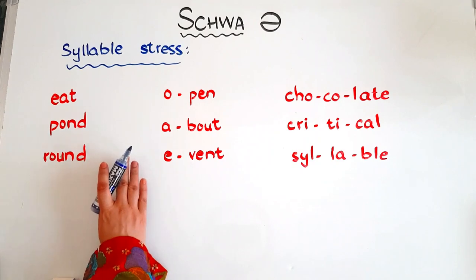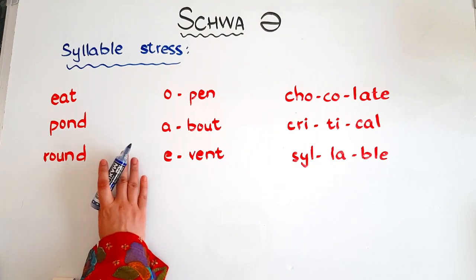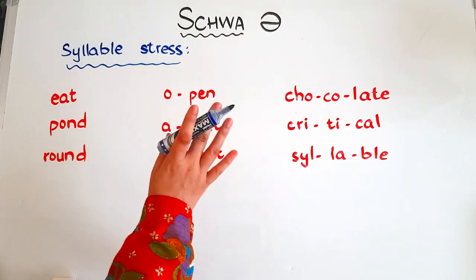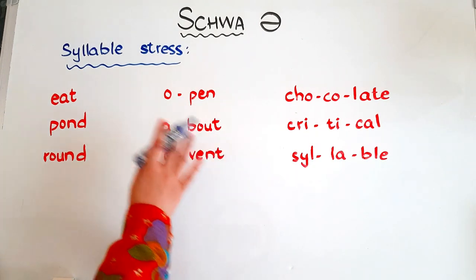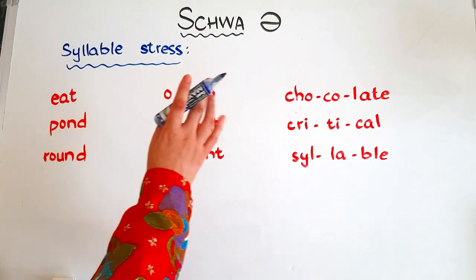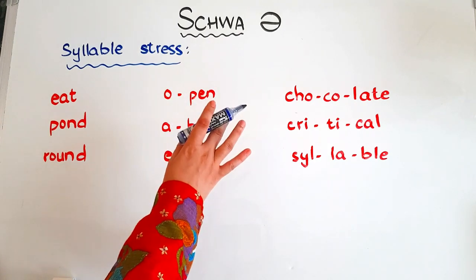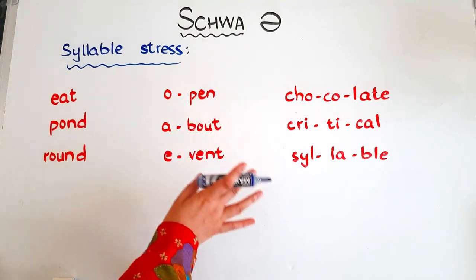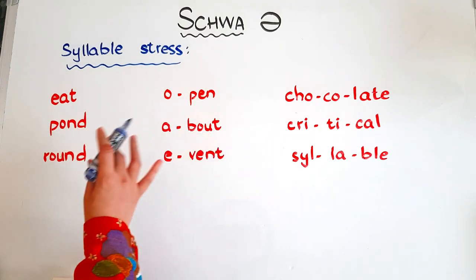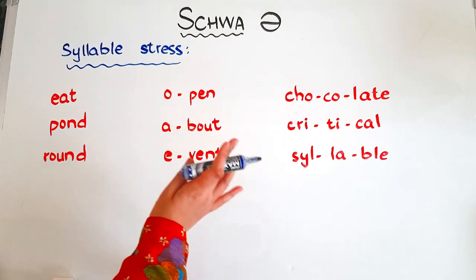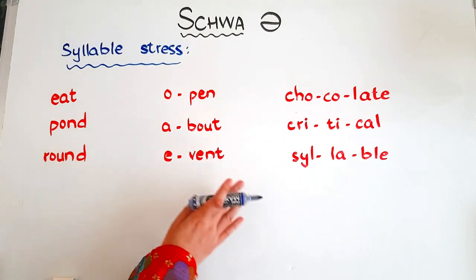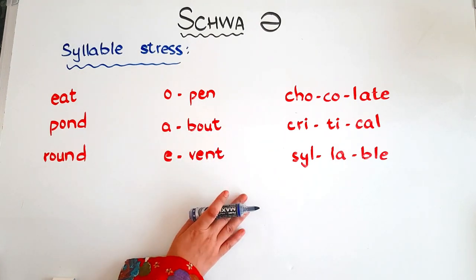So let's dive a bit deeper. To understand the schwa sound, you need to understand syllable stress, because the schwa sound is the sound that vowels make in an unstressed or unaccented syllable.